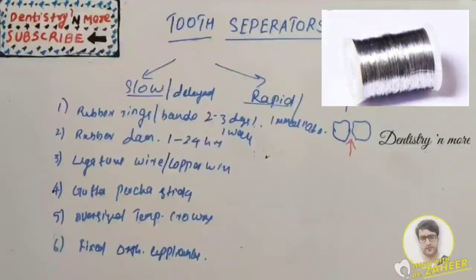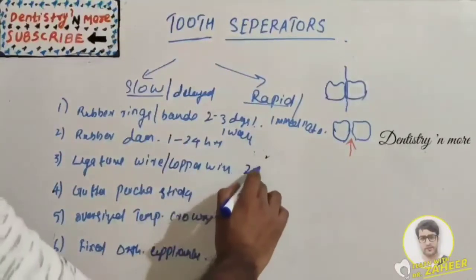Next is ligature wire or copper wire. Wire is placed beneath the contact area to form a loop, then tightening is done by twisting the two ends together. This causes an increase in separation and takes two to three days.